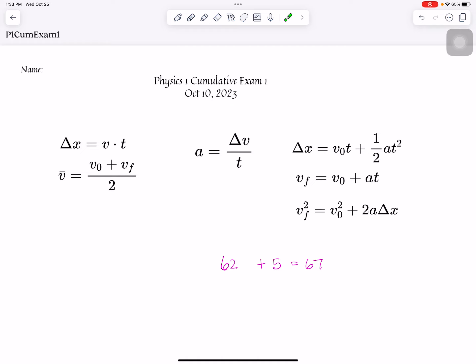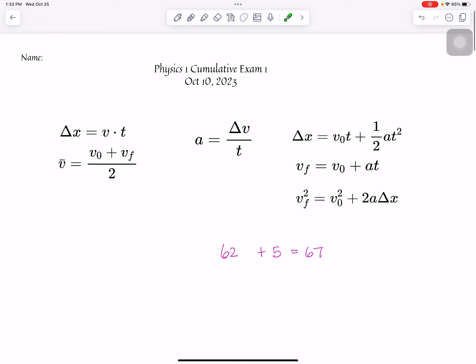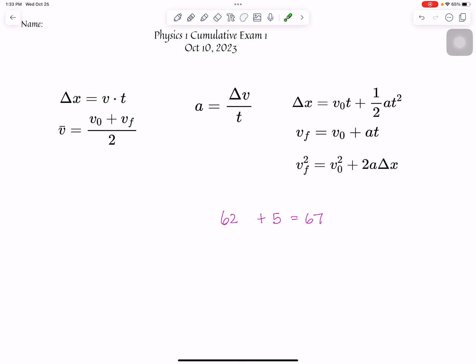Okay, here is a review of the cumulative test we took on October 10th. The thing is that there were 62 points you could earn on the test, and then I added 5 for a bonus, and so that's why you will see it on Progress Book as 67 points total.